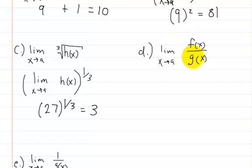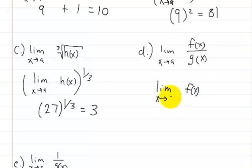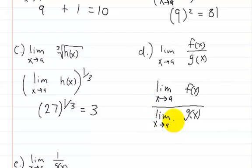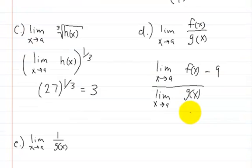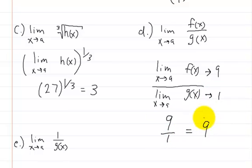Now, the limit of f of x divided by g of x as x goes to a. We separate these: the limit of f of x as x approaches a, divided by the limit of g of x as x approaches a. The limit of f of x is 9 and the limit of g of x is 1. So 9 divided by 1 is equal to 9.